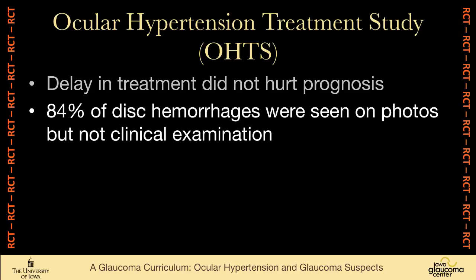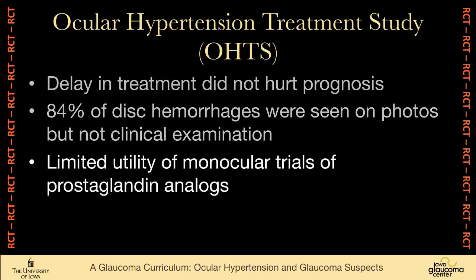84% of disc hemorrhages were seen on photos but not on clinical exam — a really startling number, that really experienced examiners would look at optic nerves and not see a disc hemorrhage, but they would be discovered later on photos. The OHTS also showed the limited utility of monocular trials in prostaglandin analogs. It pretty well showed that doing serial pressures before and after a change in therapy was a better way of evaluating the effect of a medicine than doing one-eye trials. So I personally, with great pain, have abandoned one-eye trials.